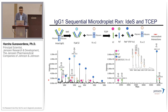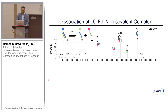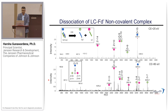To prove that these are non-covalent interactions, we fragmented them in the Agilent 6545. Increasing the voltage or collision energy settings higher gives further evidence of charge symmetry in this dissociation — charge is conserved and mass is conserved. You can see the 15+ charge state falling apart with the two different Fd' and light chain fragments with the appropriate charges being conserved.